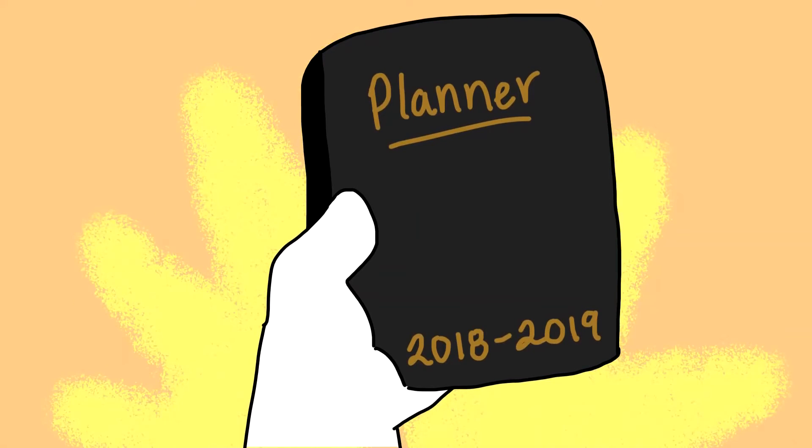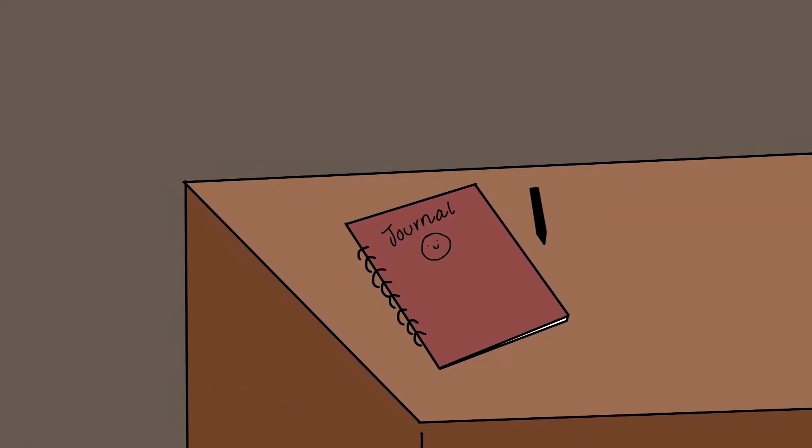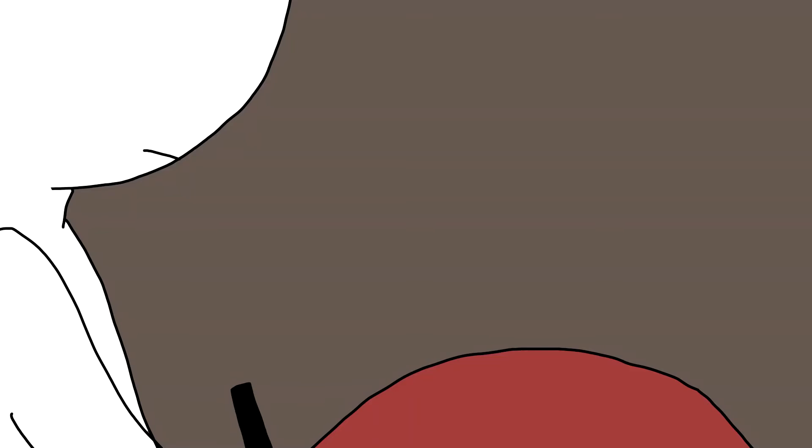Invest in a good planner to help you remember all your appointments, deadlines, and events. You may also want to keep a diary and gratitude journal on your nightstand. Before sleeping, you can write down what's bothering you in your diary, and then at the end of the night, you can end the night on a positive note by writing three things you're grateful for in your gratitude journal.